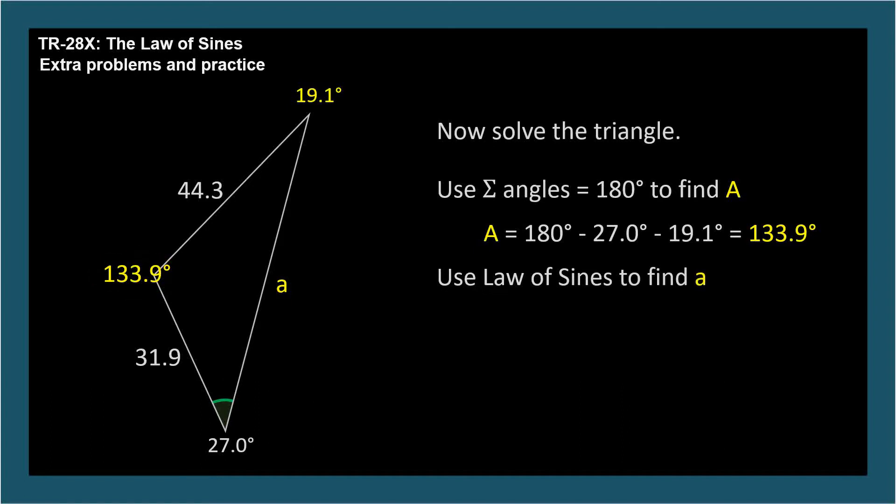Use the Law of Sines to find side A. Again, it's a good habit to put your unknown variable in the numerator of the left fraction. A over sine 133.9 degrees equals 44.3 over sine 27.0 degrees. So side A equals 70.3, we aren't told the units of measure, and we've solved the triangle.